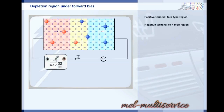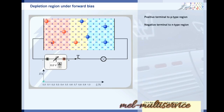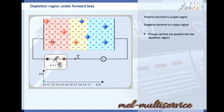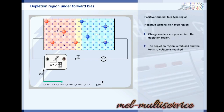Now the terminals of the external circuit have been reversed. In other words, the positive terminal is connected to the p-type region and the negative terminal is connected to the n-type region. As the external voltage is applied, more and more charge carriers from either side are pushed into the depletion region. At a certain voltage, the depletion region disappears. This voltage is called the forward voltage.